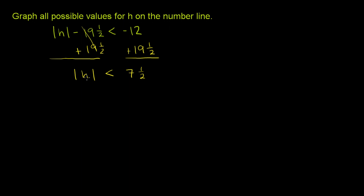So now we have that the absolute value of h is less than 7 and a half. So what does this tell us? This means that the distance,